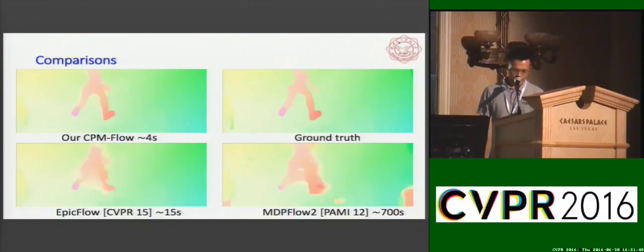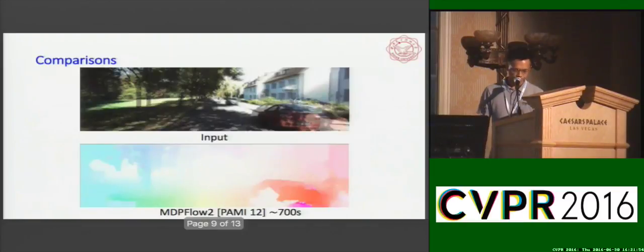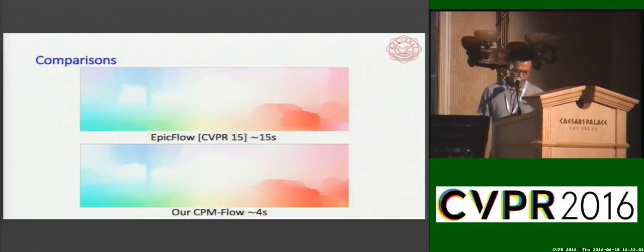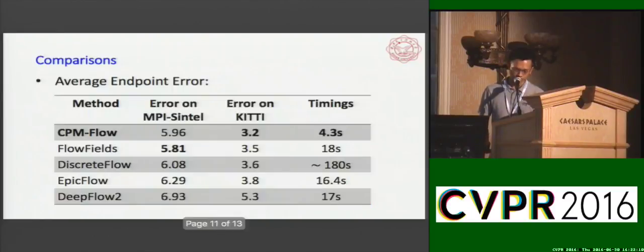Note the errors at the right bottom corner of MDP flow. This is usually a problem for variational coarse-to-fine optical flow methods, mainly caused by the propagation of errors from higher levels. Here is another example from KDE, in which MDP flow 2 performed poorly again. In contrast, our CPM flow can recover the correct flow in most areas and produce more visually pleasing results at much lower computational complexity.